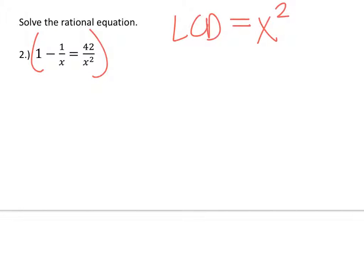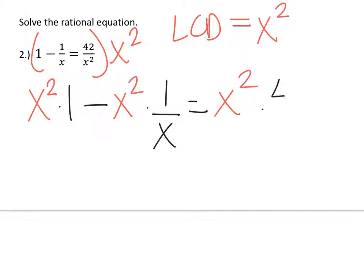I want to multiply everything by x squared. When I do that, I'll have x squared times 1 minus x squared times 1 over x equals x squared times 42 over x squared.